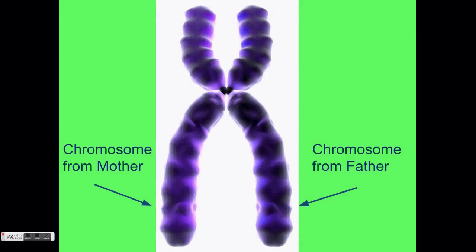Often, these pairs of chromosomes link together and appear like this. One side of the X is the mother's chromosome, and the other side is the father's.